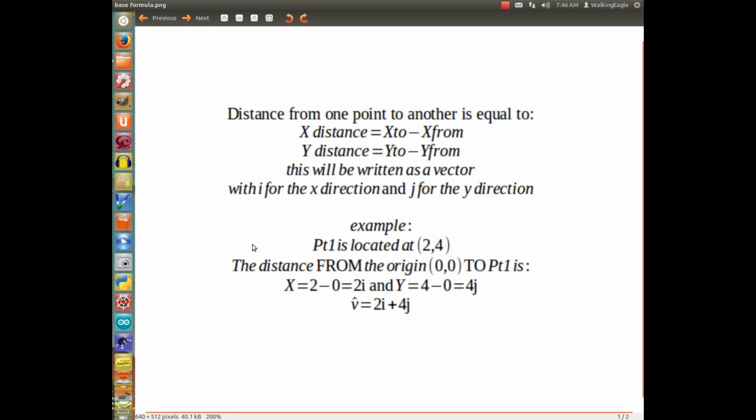is x is equal to 2 minus 0, which equals 2i. So we did the 2 point, the point we're going to, minus the point we're going from. The y is equal to 4 minus 0,